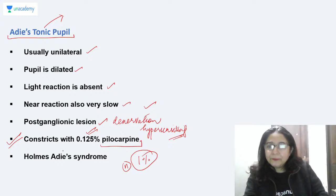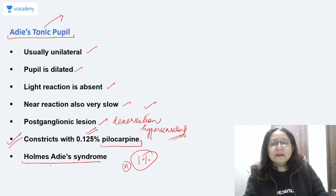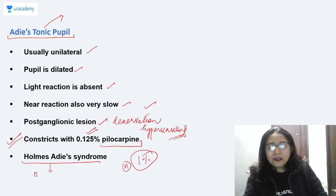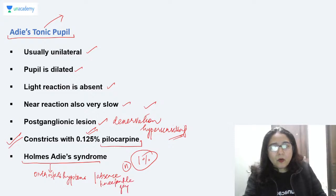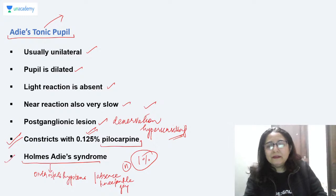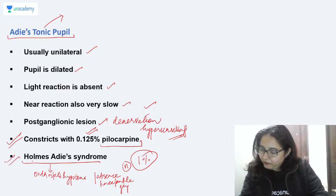When Adie's tonic pupil is associated with orthostatic hypotension and absence of deep tendon reflexes — weakness of knee jerk or ankle jerk — this combination is known as Holmes-Adie syndrome.